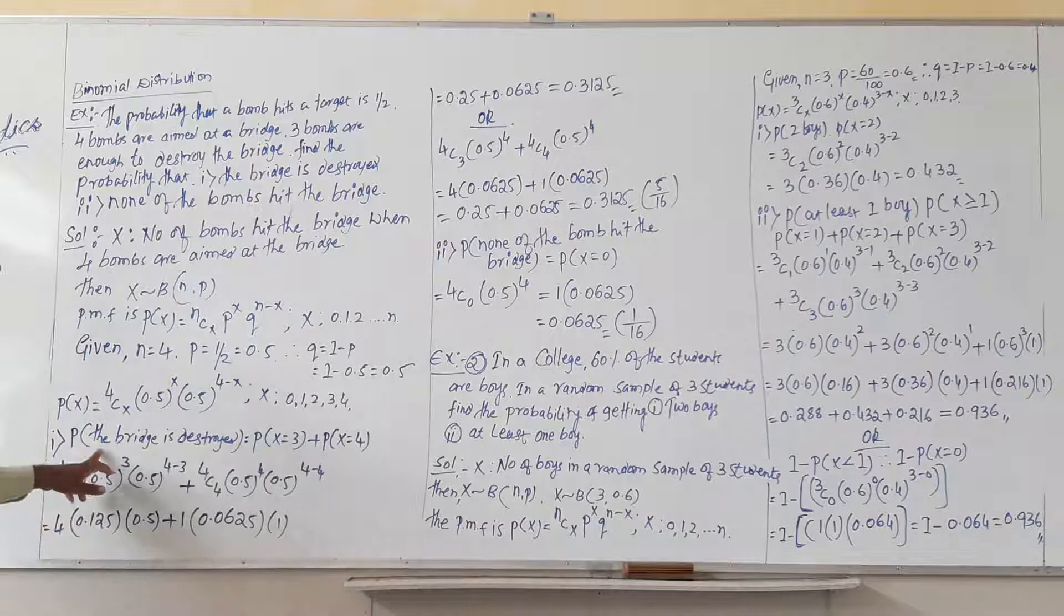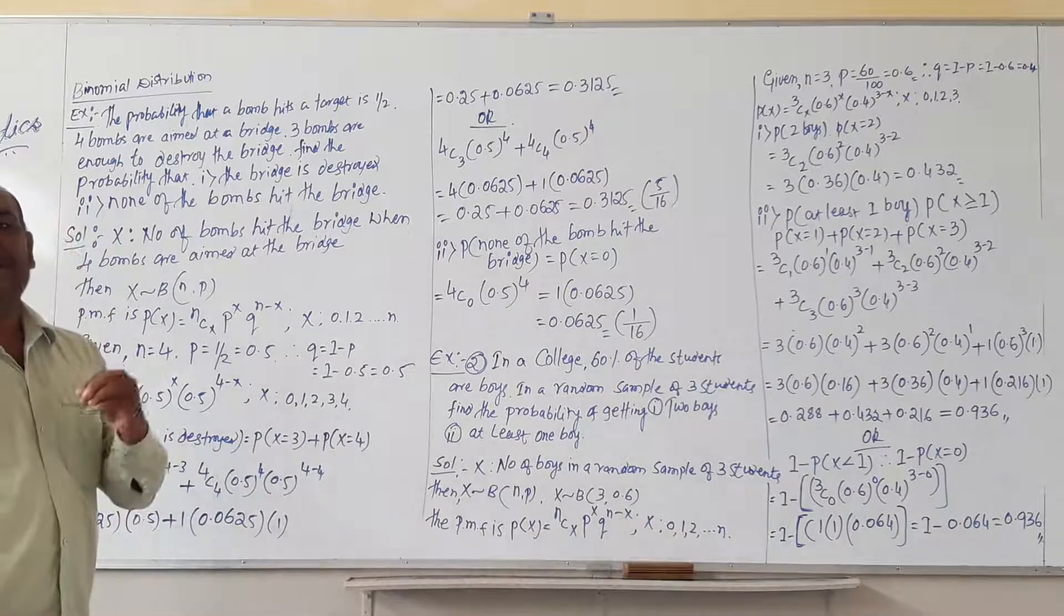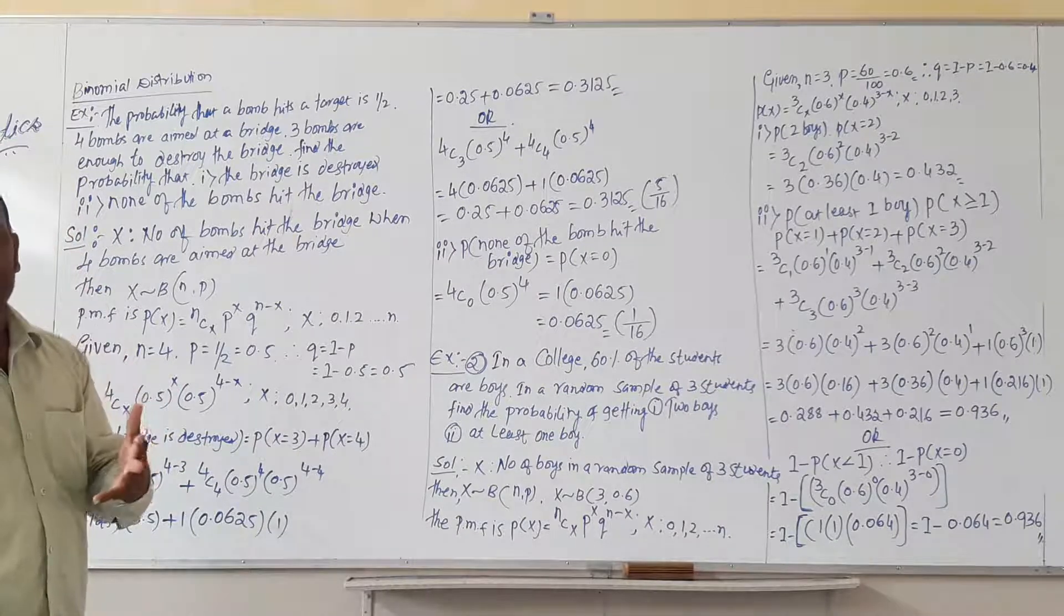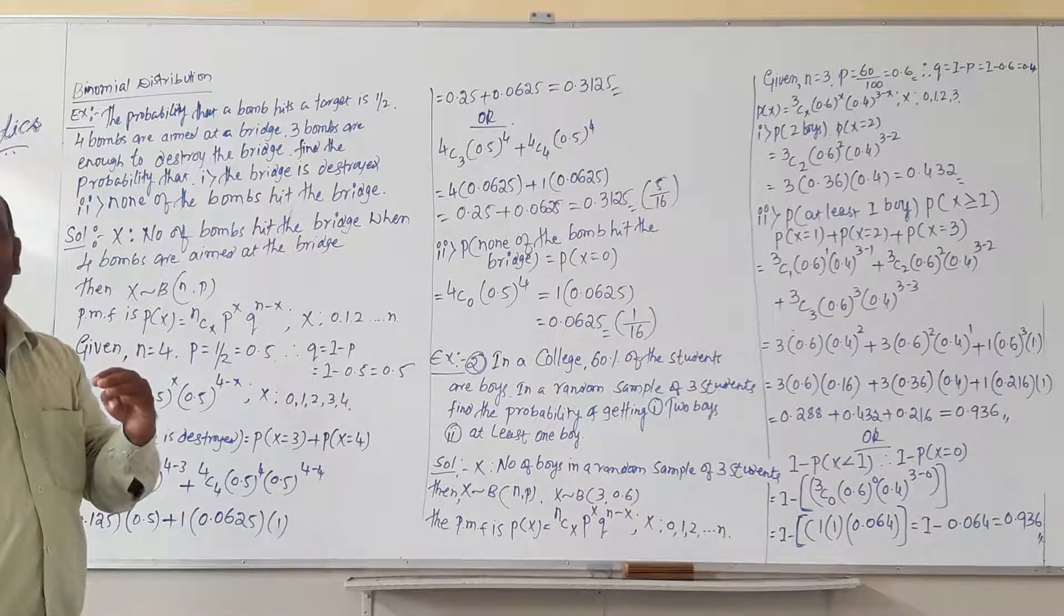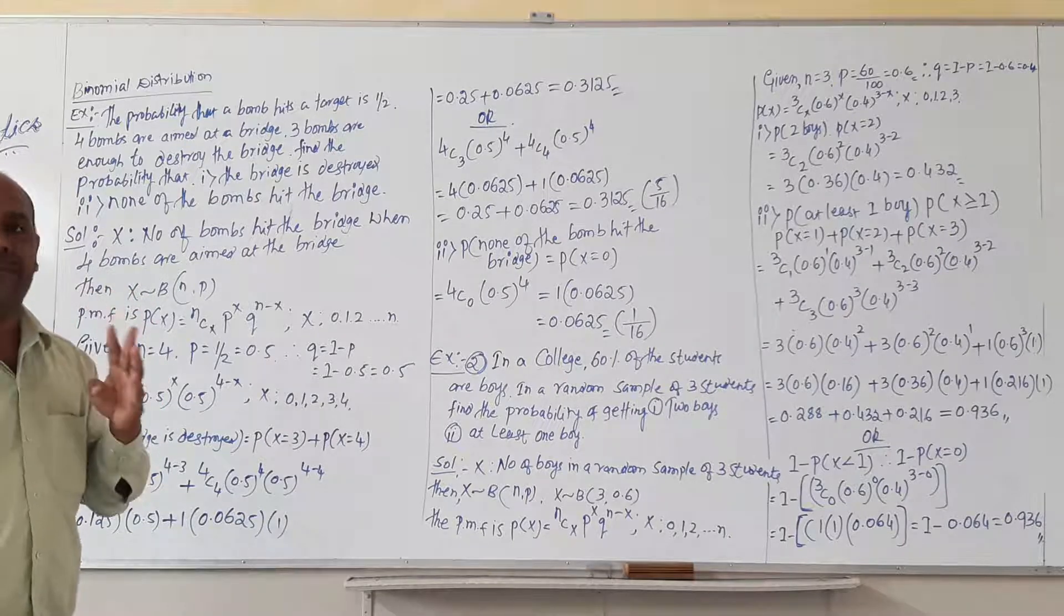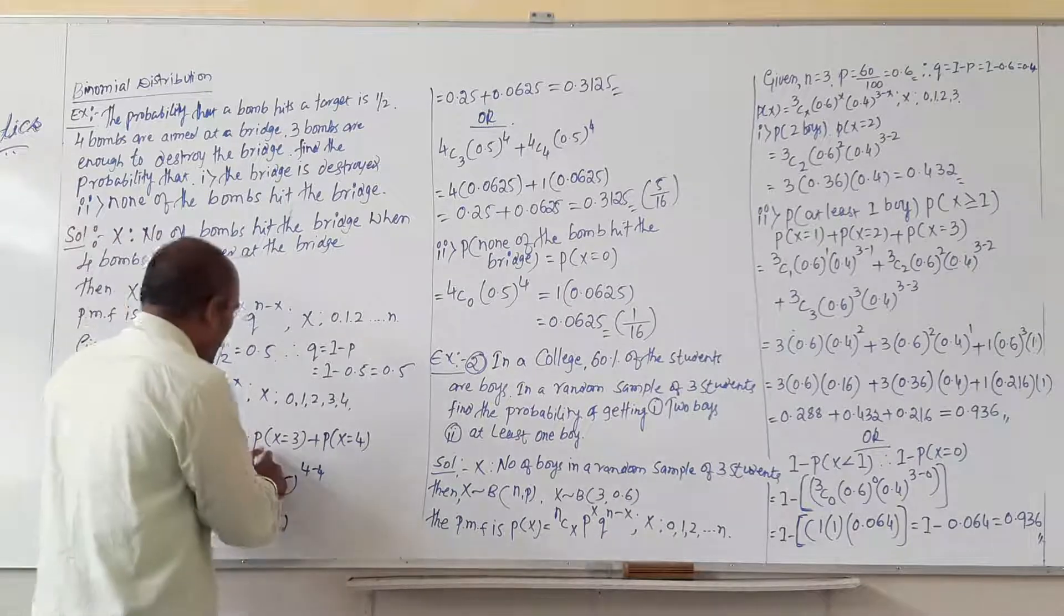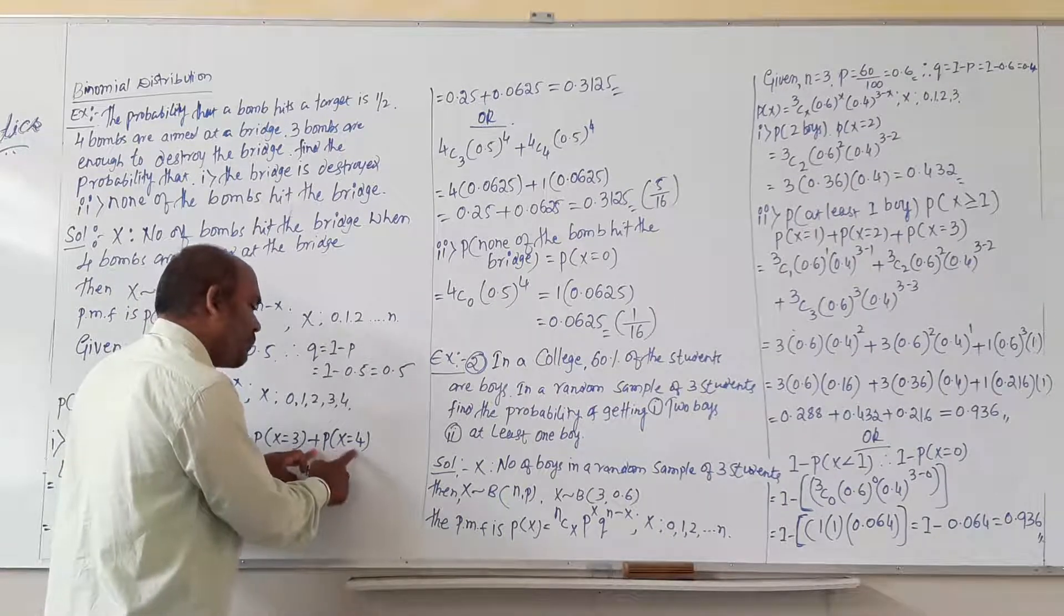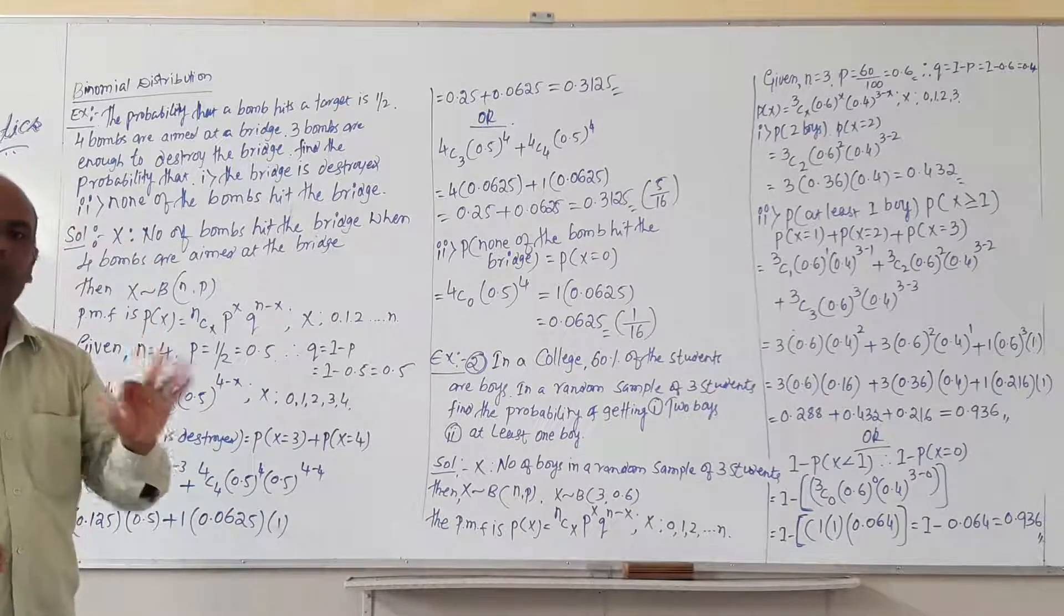First question is the bridge is destroyed. The bridge is destroyed when at least three bombs hit the target, so the bridge will be destroyed.